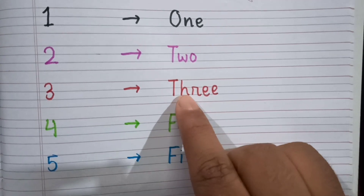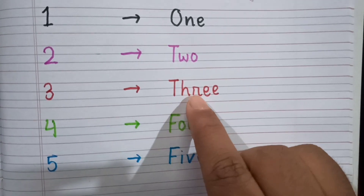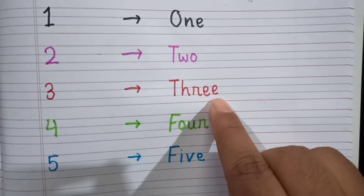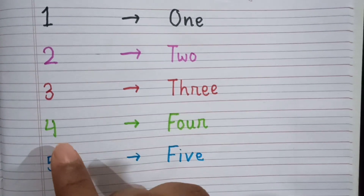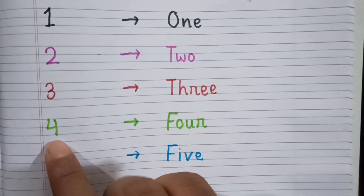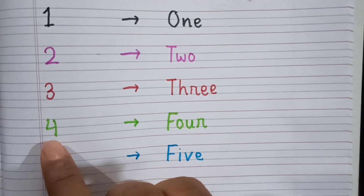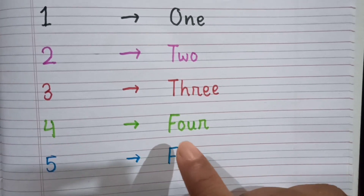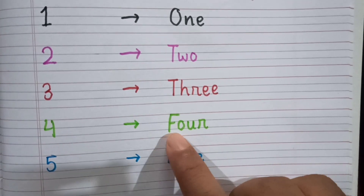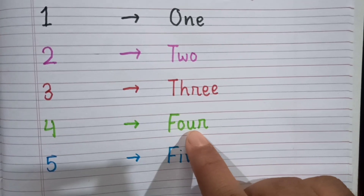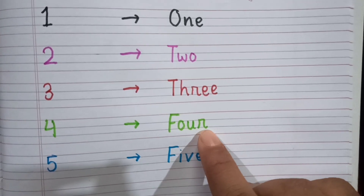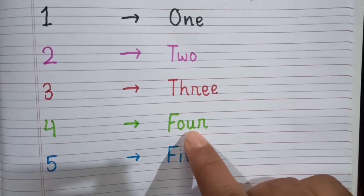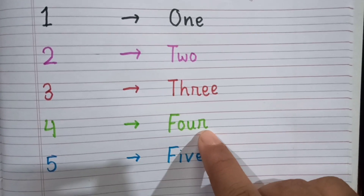Three. After three, the next number is four. This is four, and the spelling of four is F-O-U-R. Four.